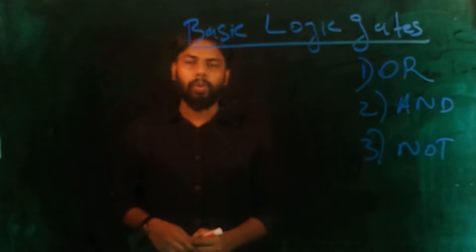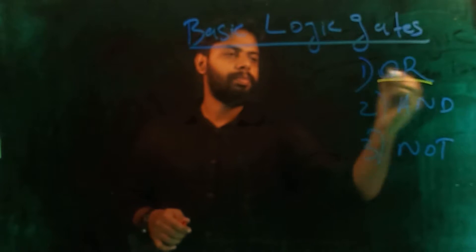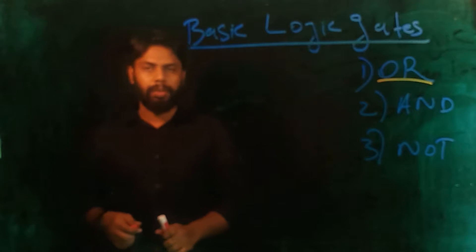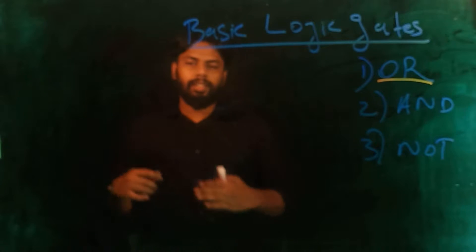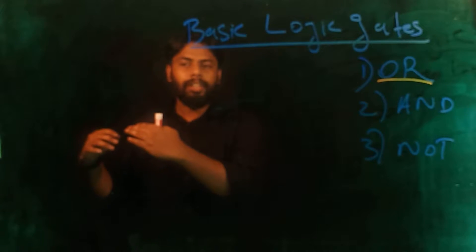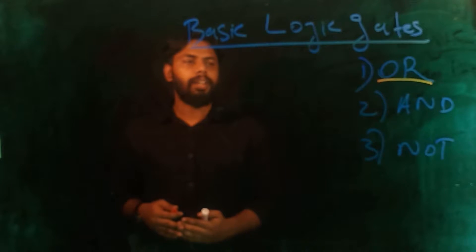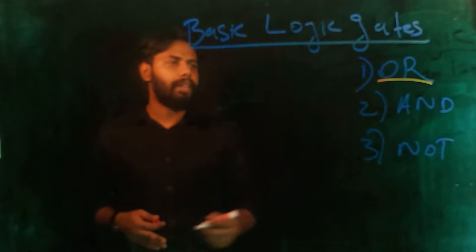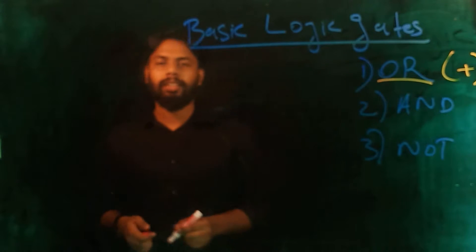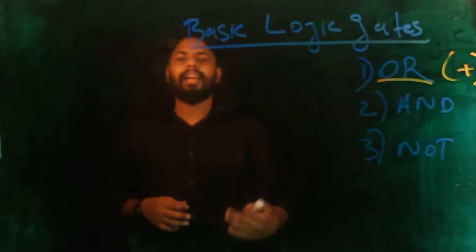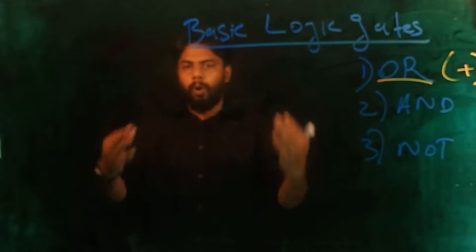Now we are going to discuss them one by one. What is OR gate? OR gate is the OR operation. Logical addition operation is OR operation. In other words, we are using a plus symbol for logical addition or OR operation.